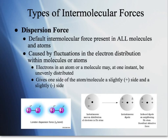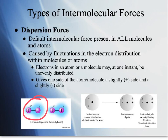Dispersion force is caused by fluctuations in the electron distribution within molecules or atoms — electrons need to be unevenly distributed. For example, looking at an iodine molecule, the blue haze is the electron cloud. We can see that there are more electrons towards the right-hand iodine atom than the left-hand one, so at this one instance they are very much unevenly distributed.